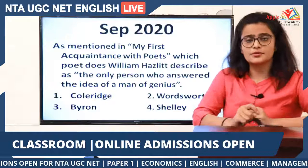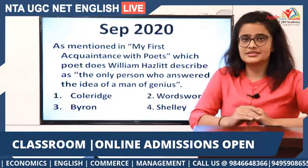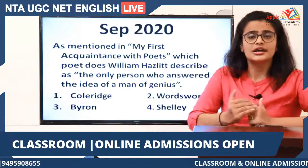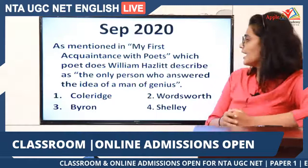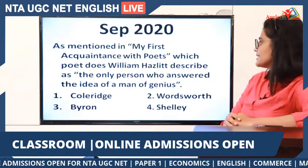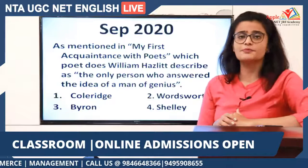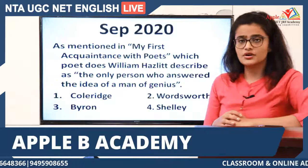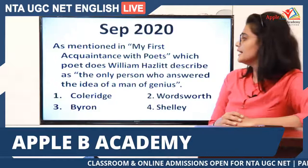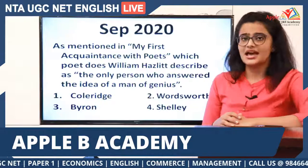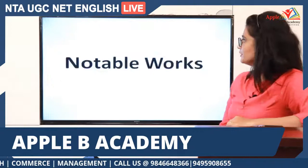For the NET exam, you have to look at remarks other authors made about Coleridge, his important poems and collections, and his literary criticism. In 'My First Acquaintance with Poets,' William Hazlitt describes Coleridge as the only person who answered the idea of a man of genius. So the answer to that exam question is Samuel Taylor Coleridge.